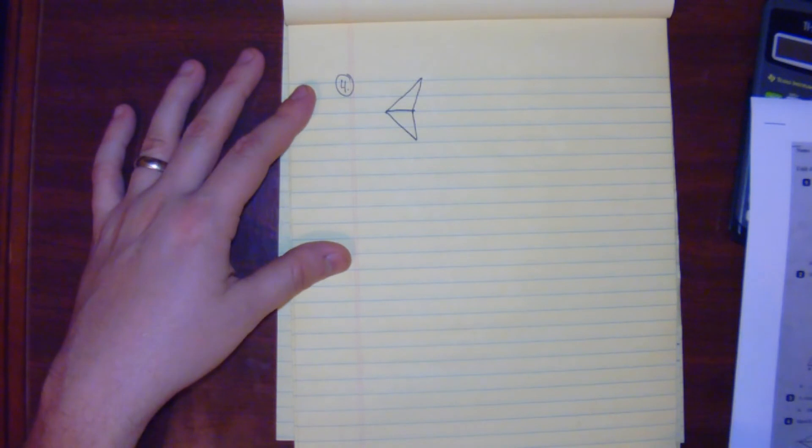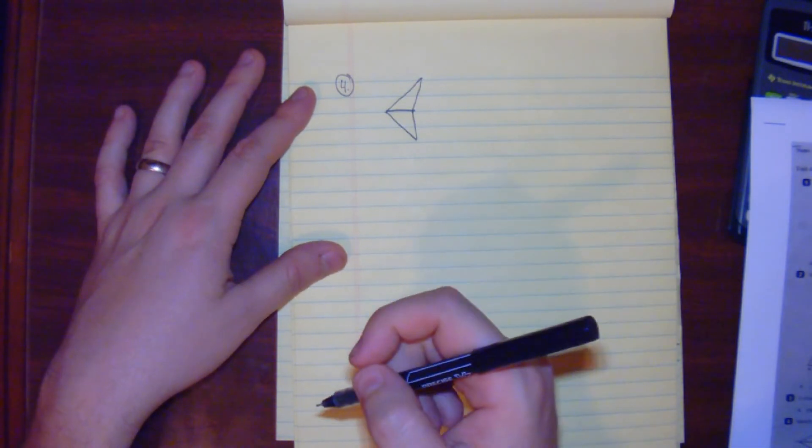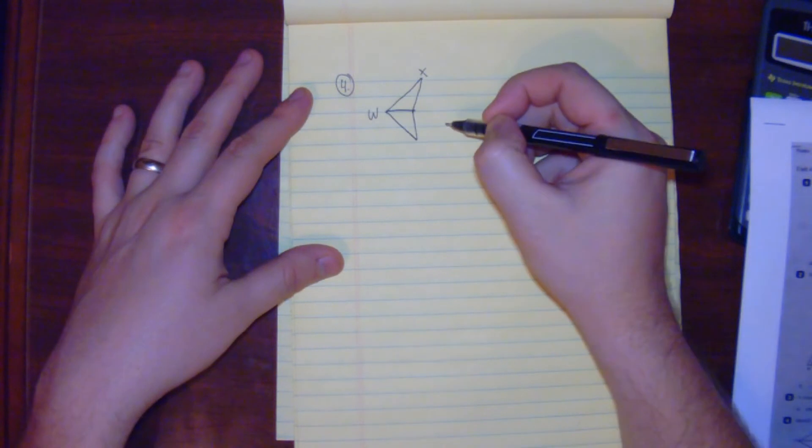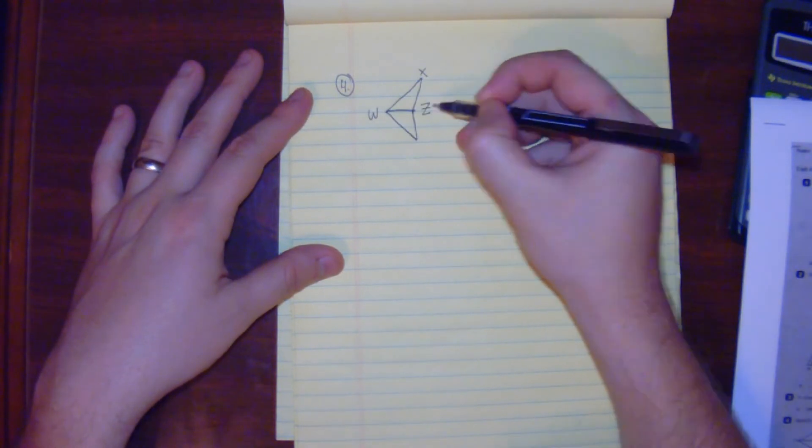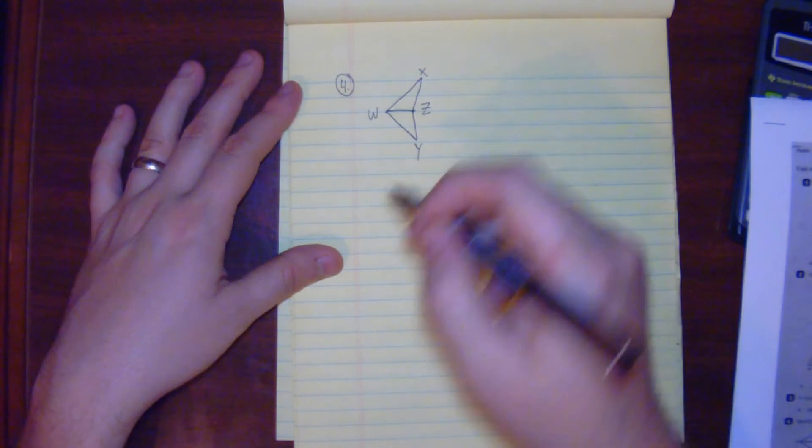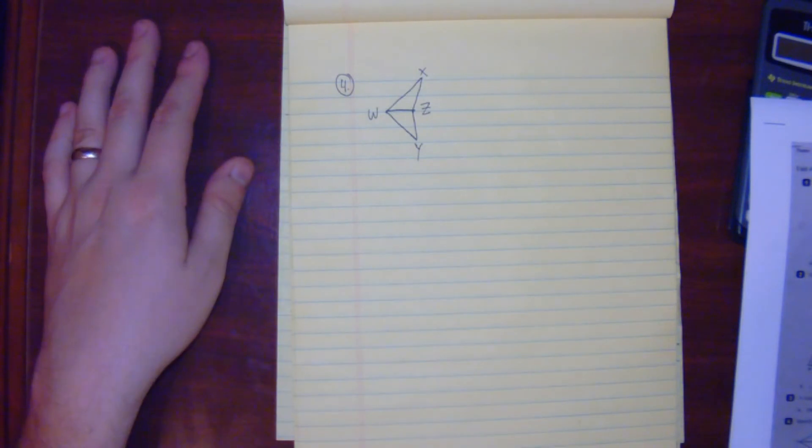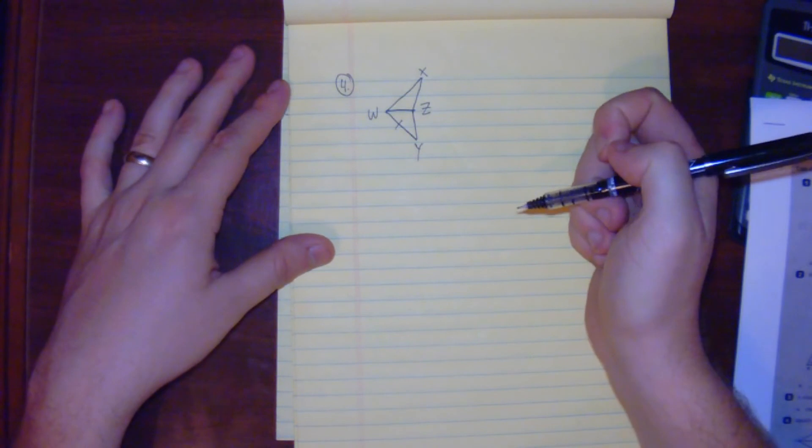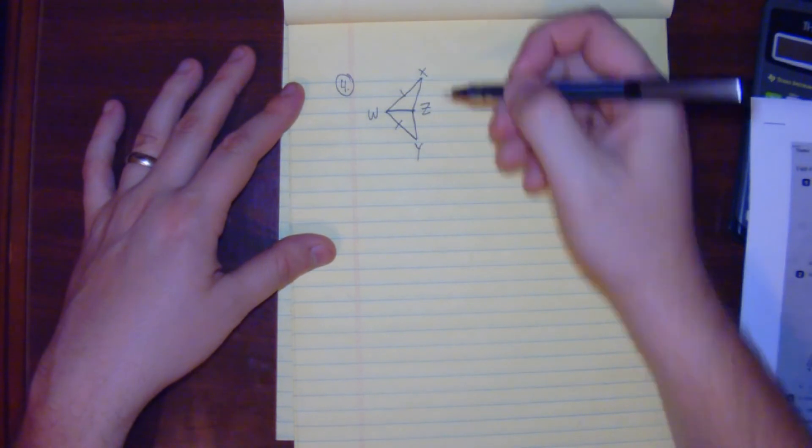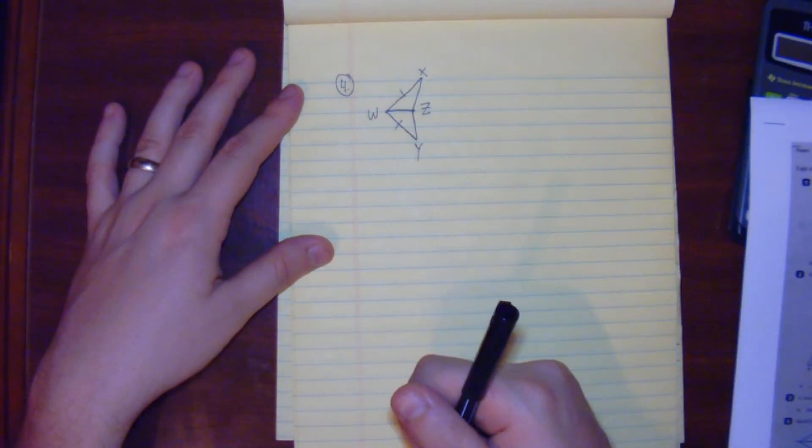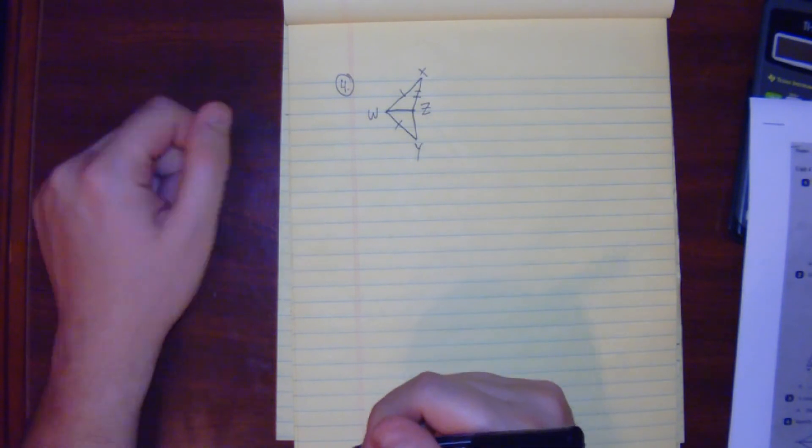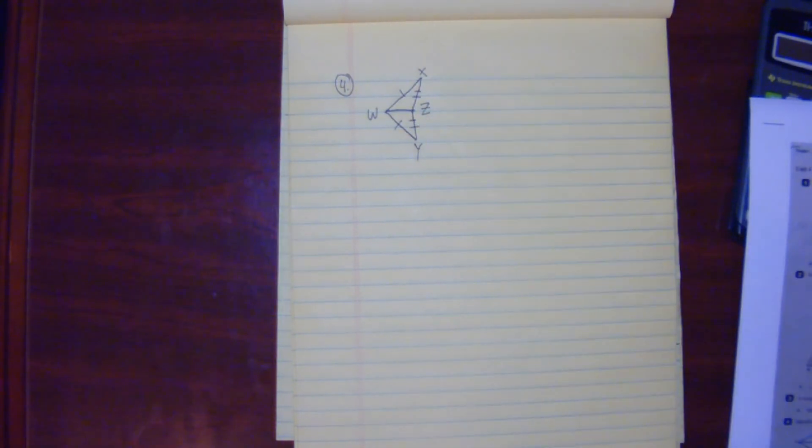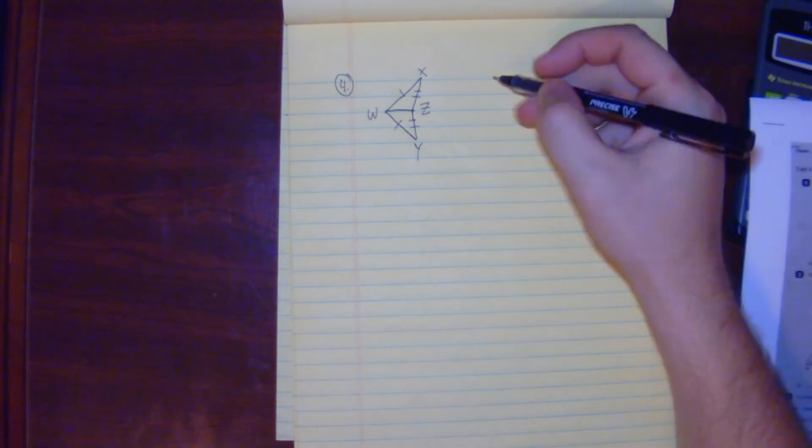We have this first triangle WXZ and then Y. The information given is the following: WY is congruent to WX, then we have ZX is equal to ZY, and they're trying to ask us to create a congruency statement.